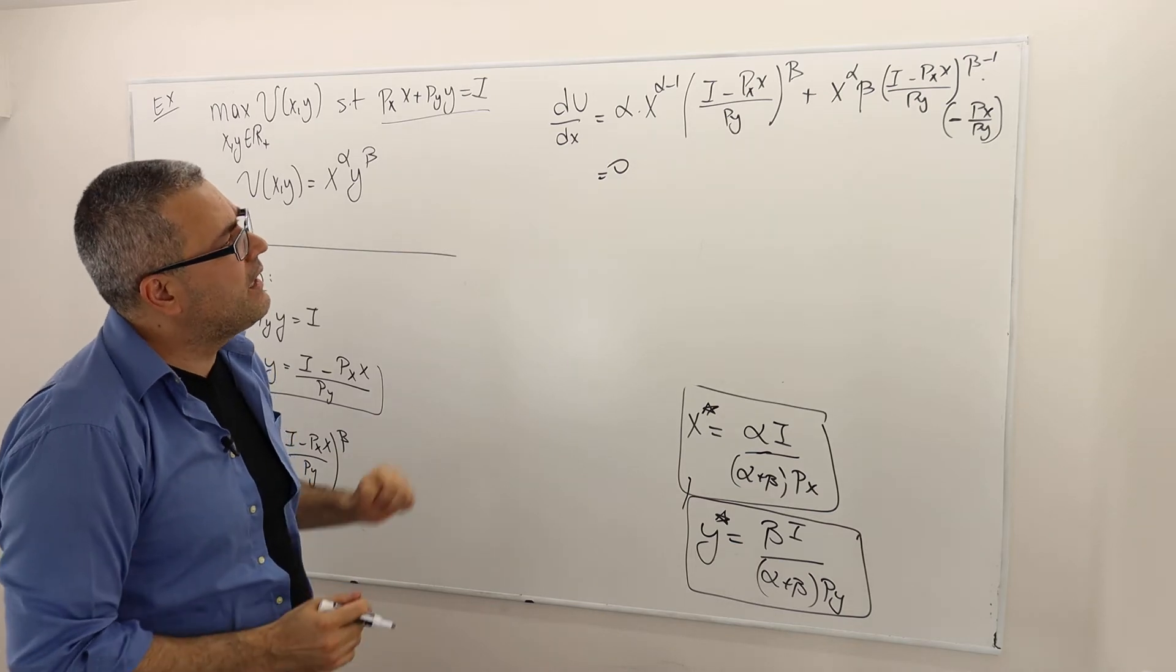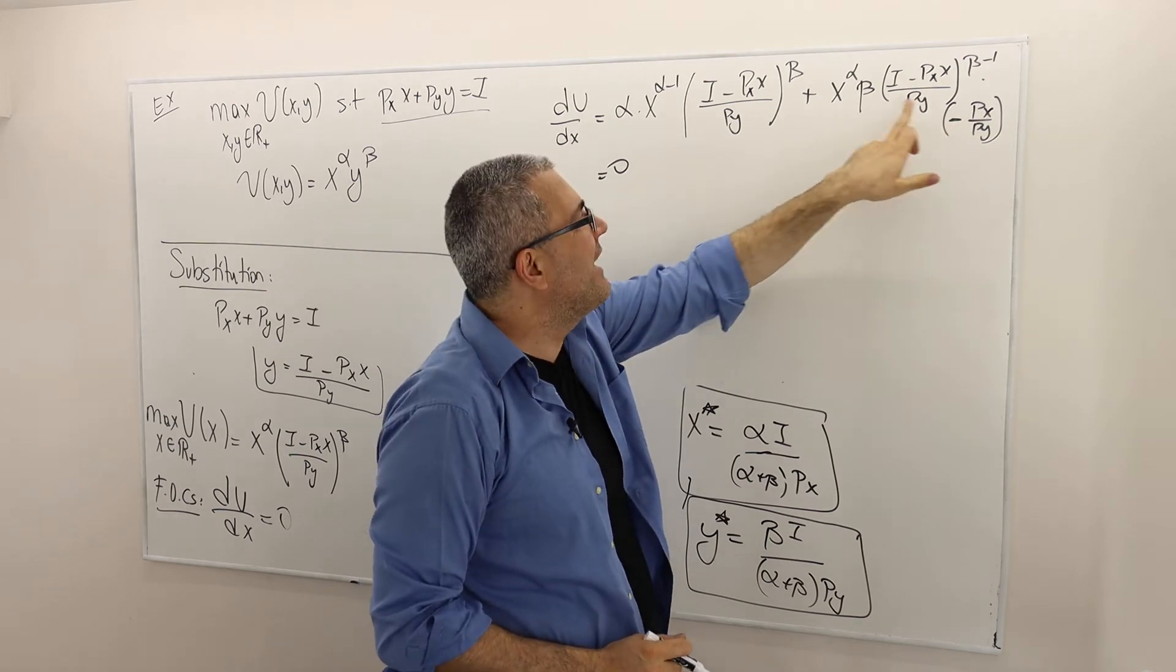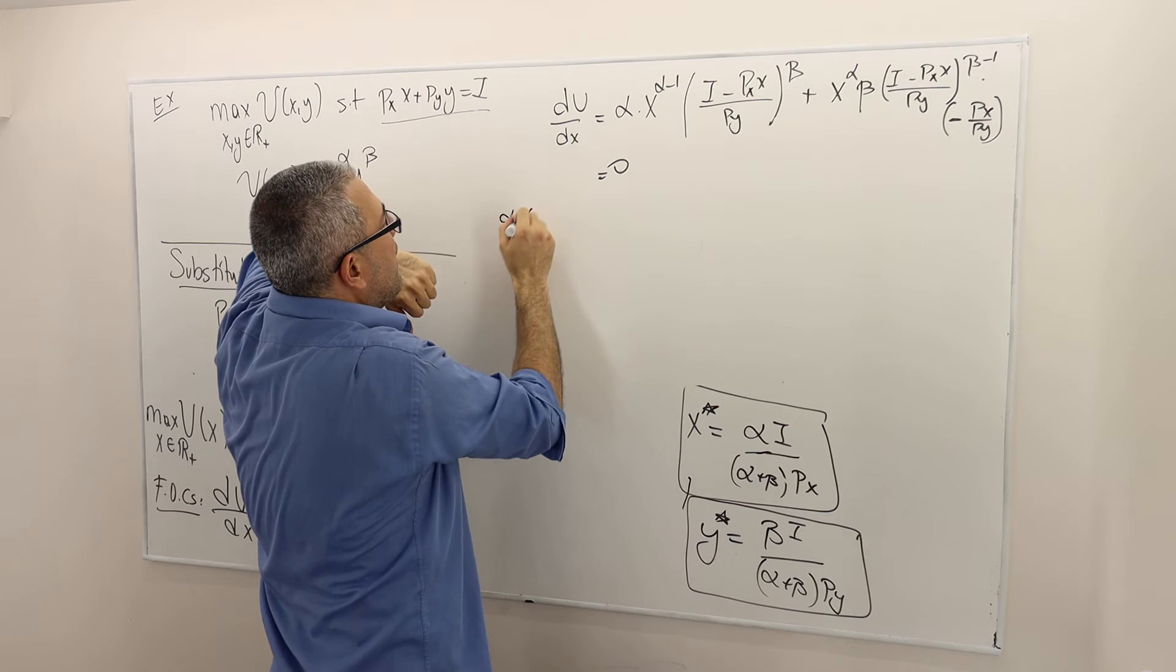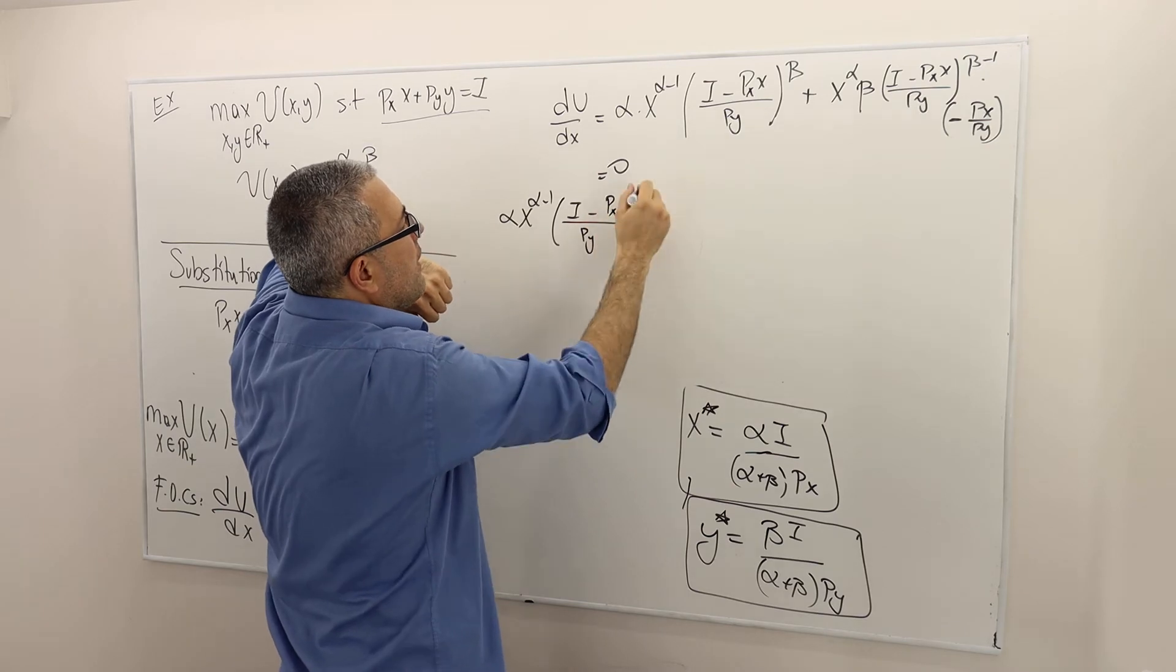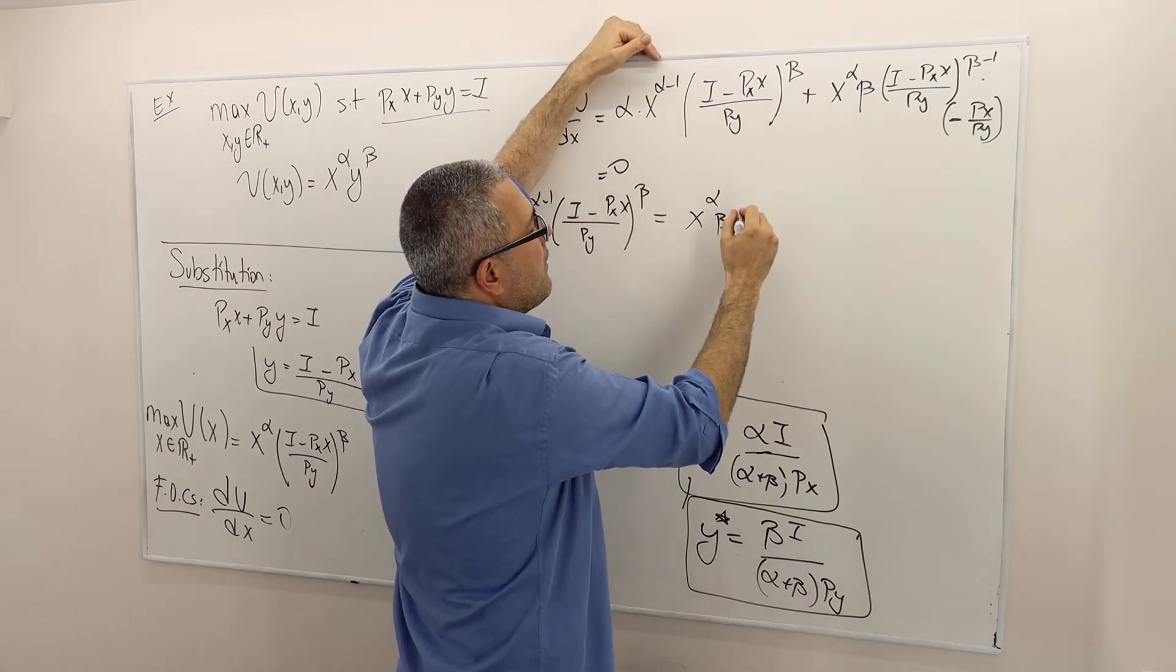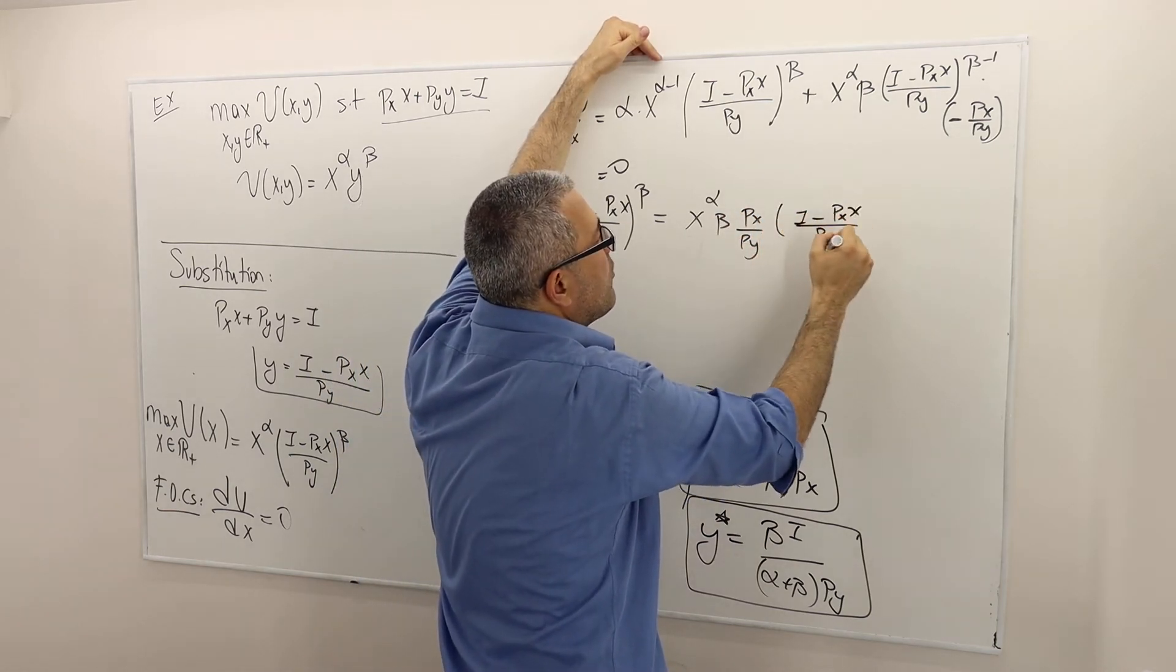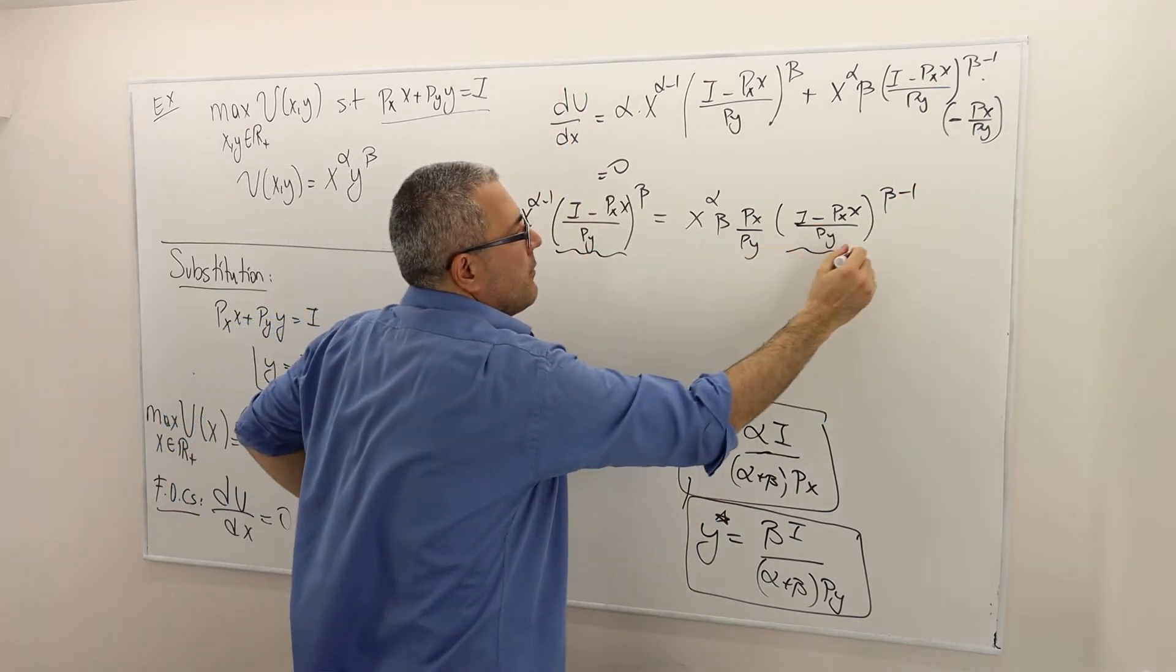Okay. So what does that mean? That means, so I have one term, which is multiplied by something negative, send it to the other side, so it's going to be positive. So if I do that, I keep this on the left-hand side. So on the left-hand side, I have alpha X alpha minus 1, I minus PXX divided by PY beta equals this term, X alpha beta PX over PY. Now it's positive because I send it to the other side, remember, multiplied by PY to the power of beta minus 1. Hmm, very good. So this term and this term is exactly the same.